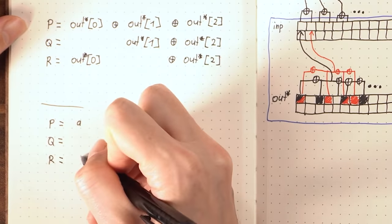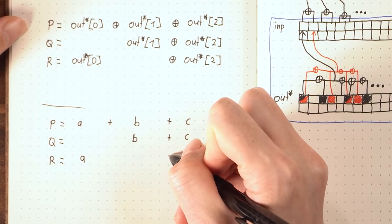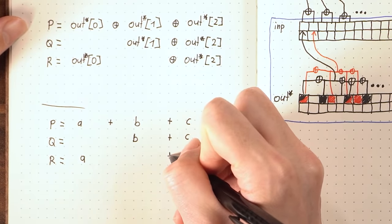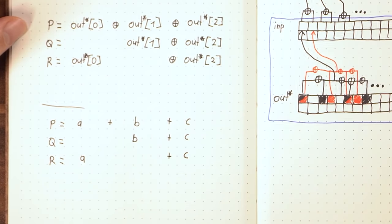Imagine it like this. P equal to A plus B plus C. Q equal to B plus C. And R equal to A plus C. This looks like very basic school math, right? If we know the values of capital P, Q and R, then we can solve this system of linear equations to find out the value for the variables A, B and C.